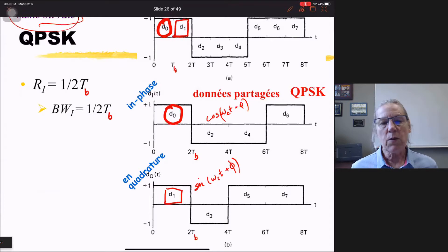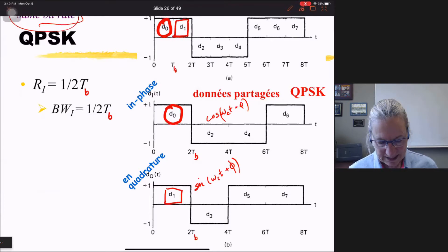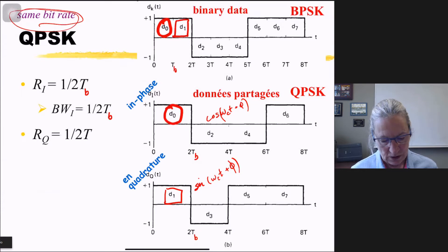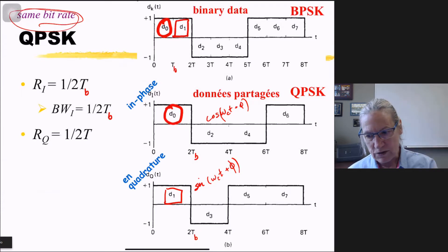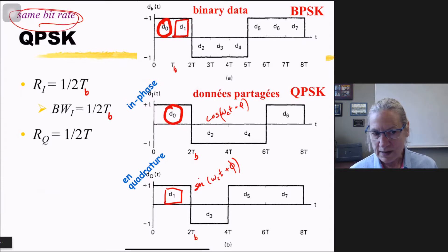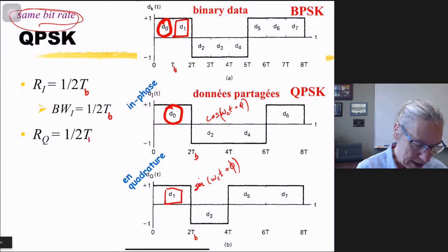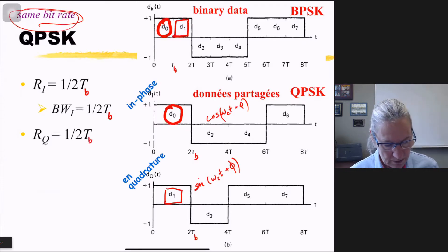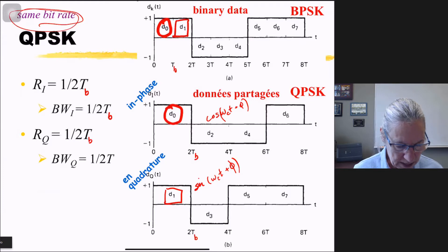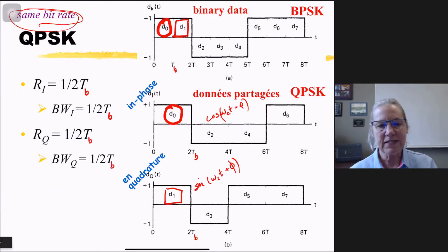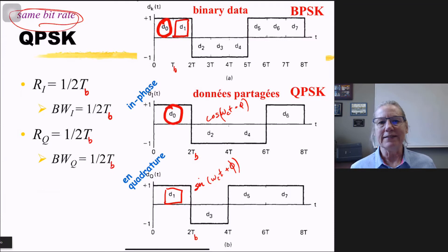The quadrature branch is exactly the same by symmetry: the bit rate going through the quadrature branch is 1/(2T) and the bandwidth is also 1/(2T). So those are the two branches separately.